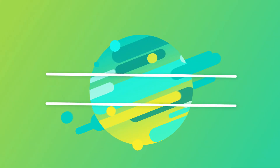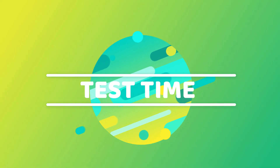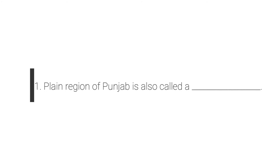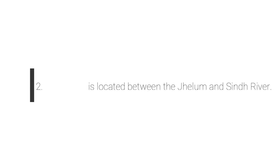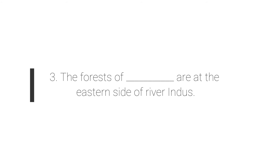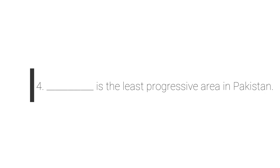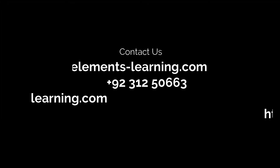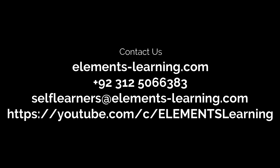Ab hum apna test lenge aur dekhenge ke hum ne aaj ki episode se kya seekha. Number one: plain region of Punjab is also called — Upper Indus Plain. Number two: dash is located between the Jhelum and Sindh rivers — Thal. Number three: the forests of dash area are at the eastern side of River Indus — Mangrove. Number four: dash is the least progressive area in Pakistan — Kharan. Students, agli episode tak apna bahut khayal rakhiye, Allah Hafiz.